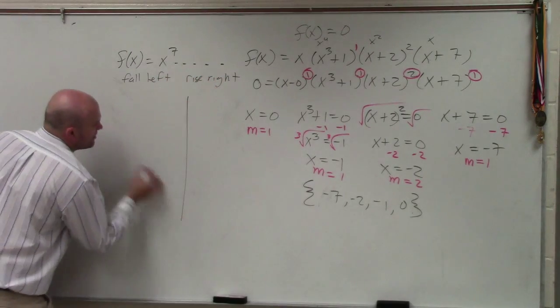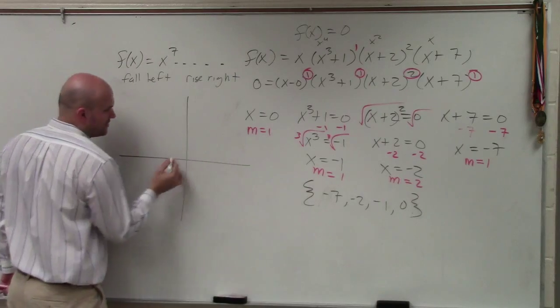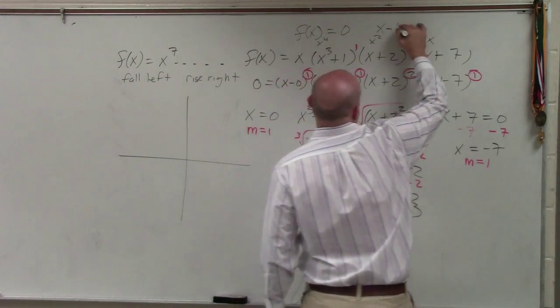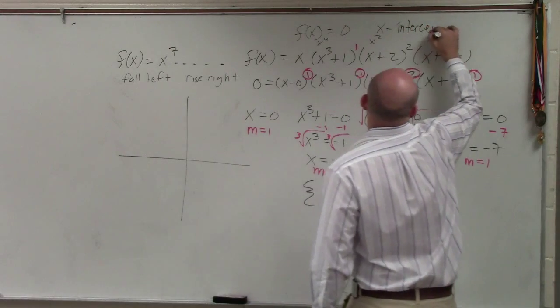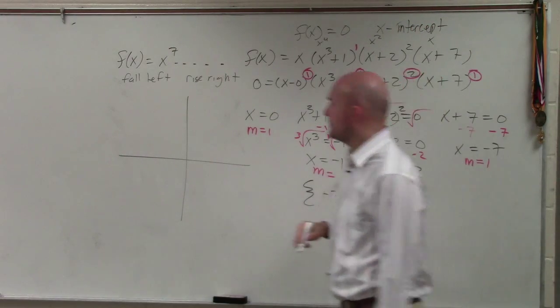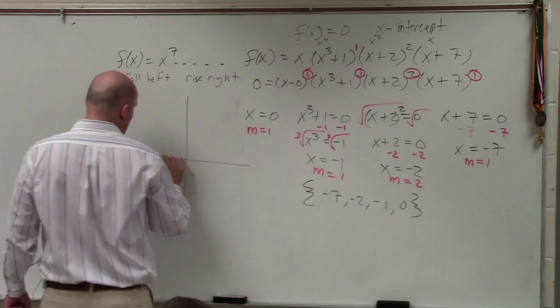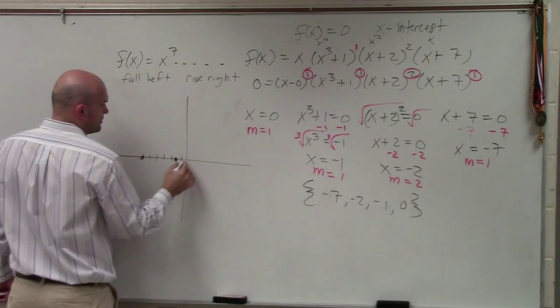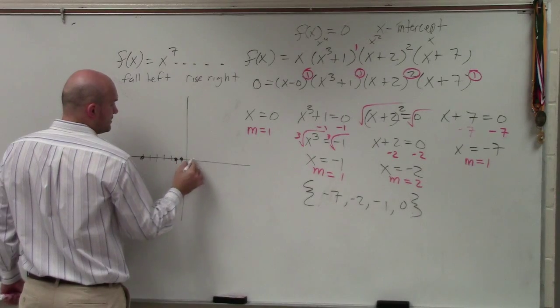Now let's see if we can graph what the graph looks like. We have zeros. When f of x equals 0, that's the same thing as an x-intercept. So 1, 2, 3, 4, 5, 6, 7, negative 2, negative 1, and 0.